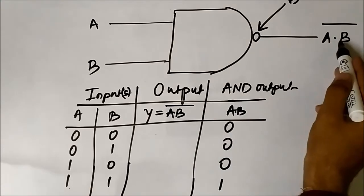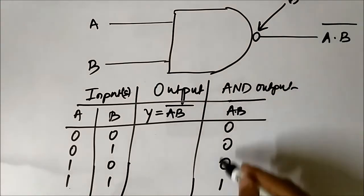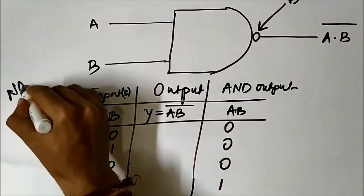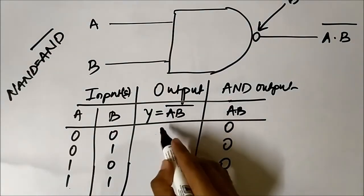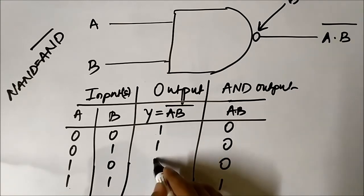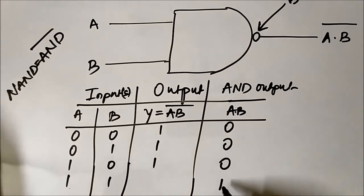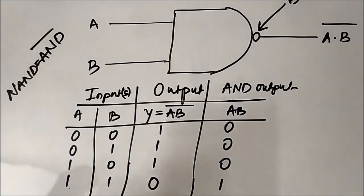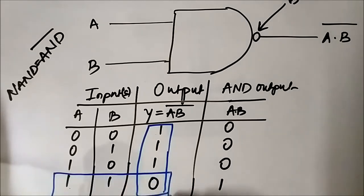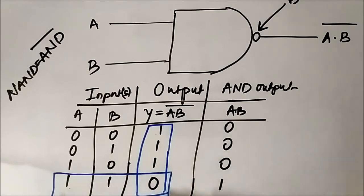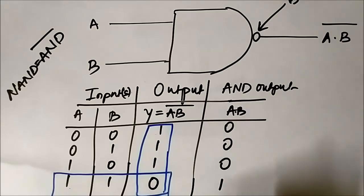The output of the NAND gate is the complement version of the AND gate output — NAND is the inversion of AND. So if the AND output is 0, the NAND output is 1. In three cases the output will be 1, and when the AND output is 1 the NAND output will be 0. So in the NAND gate, when both inputs are logic high the output is 0, and in all other cases the output is 1.